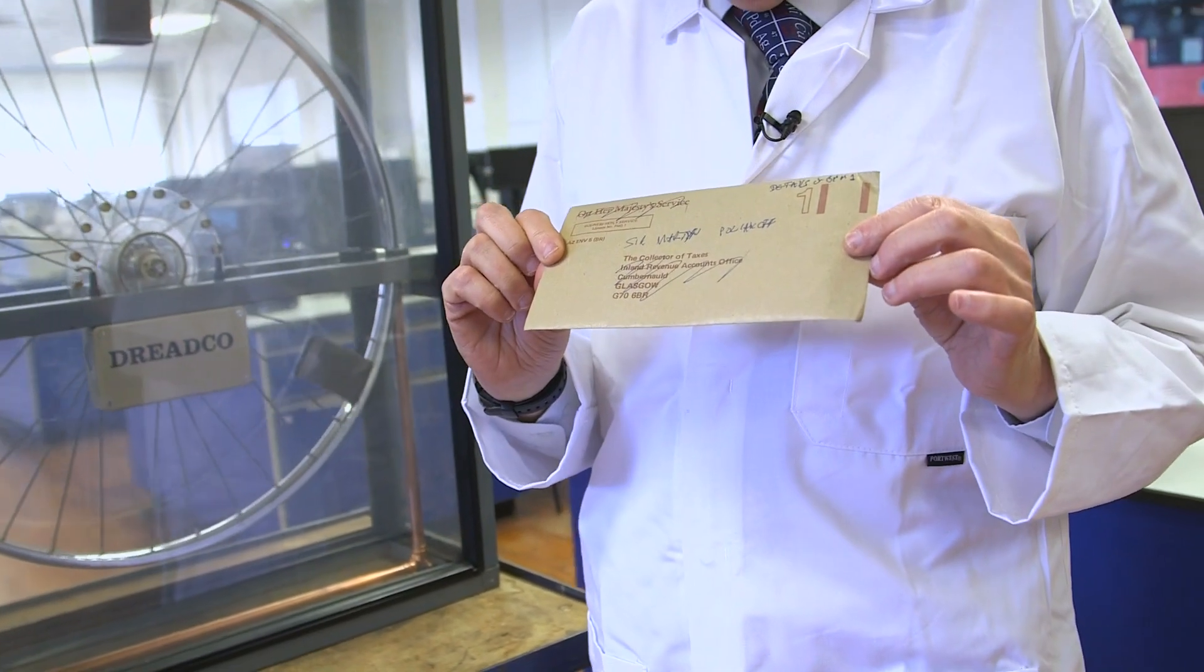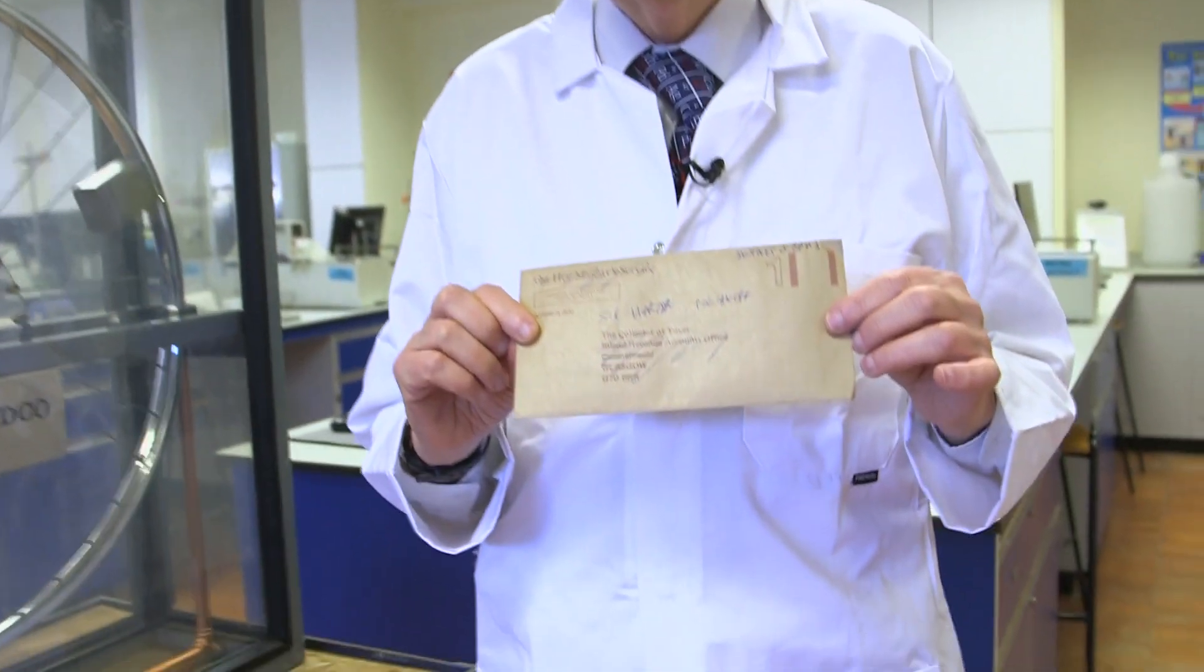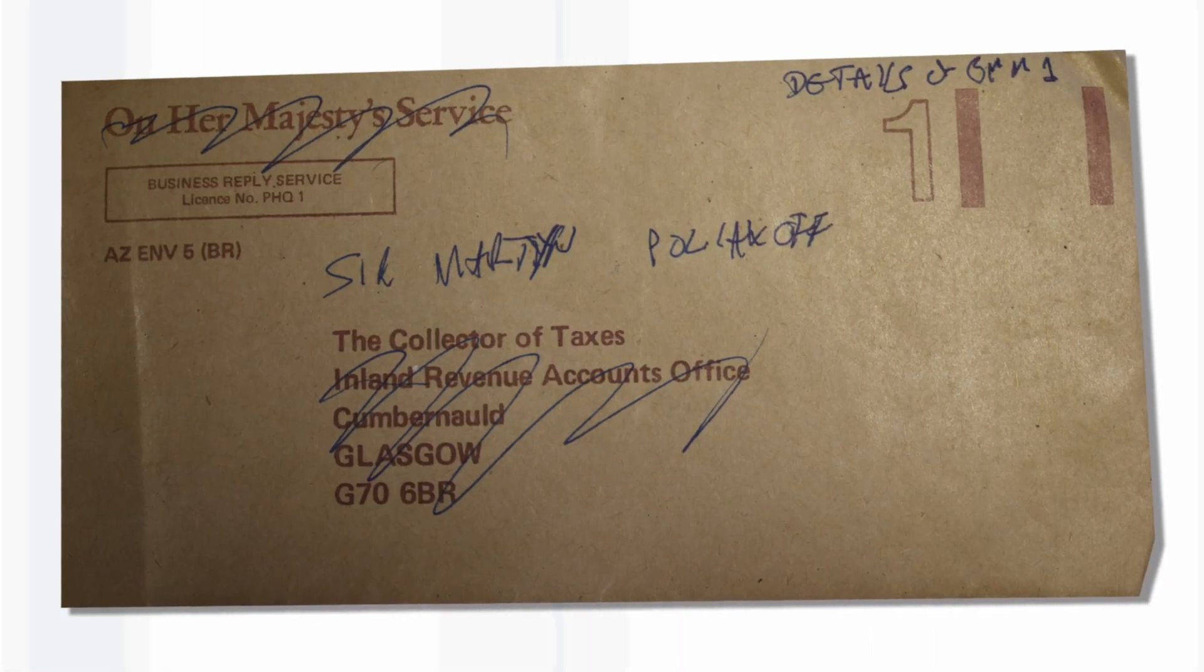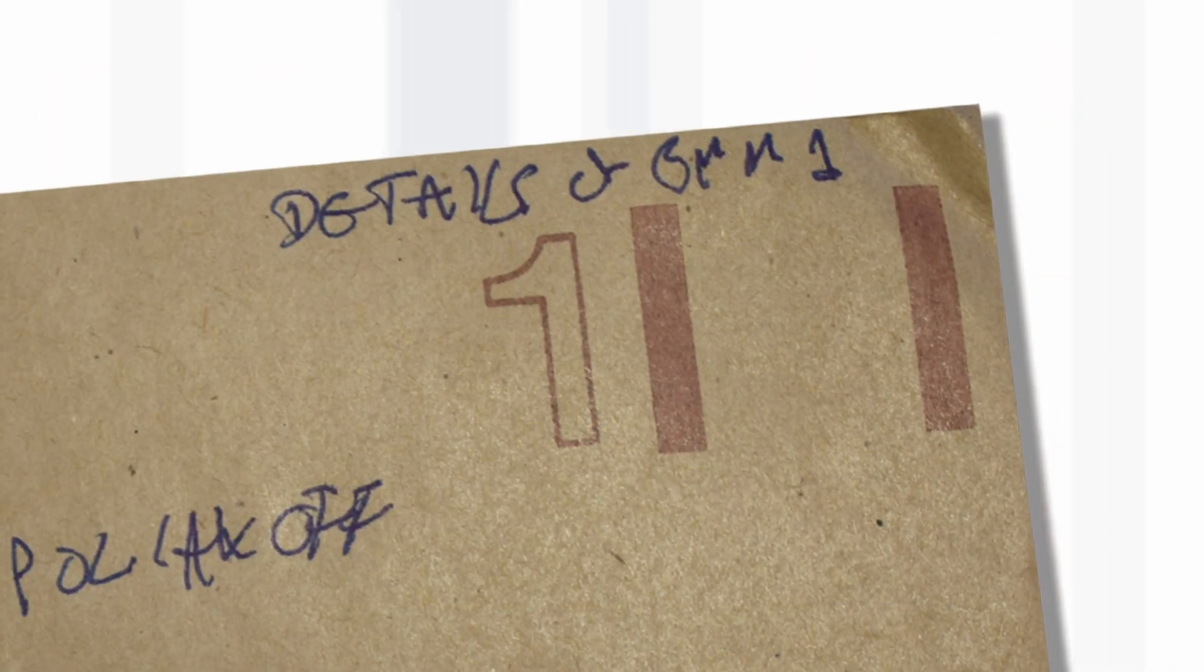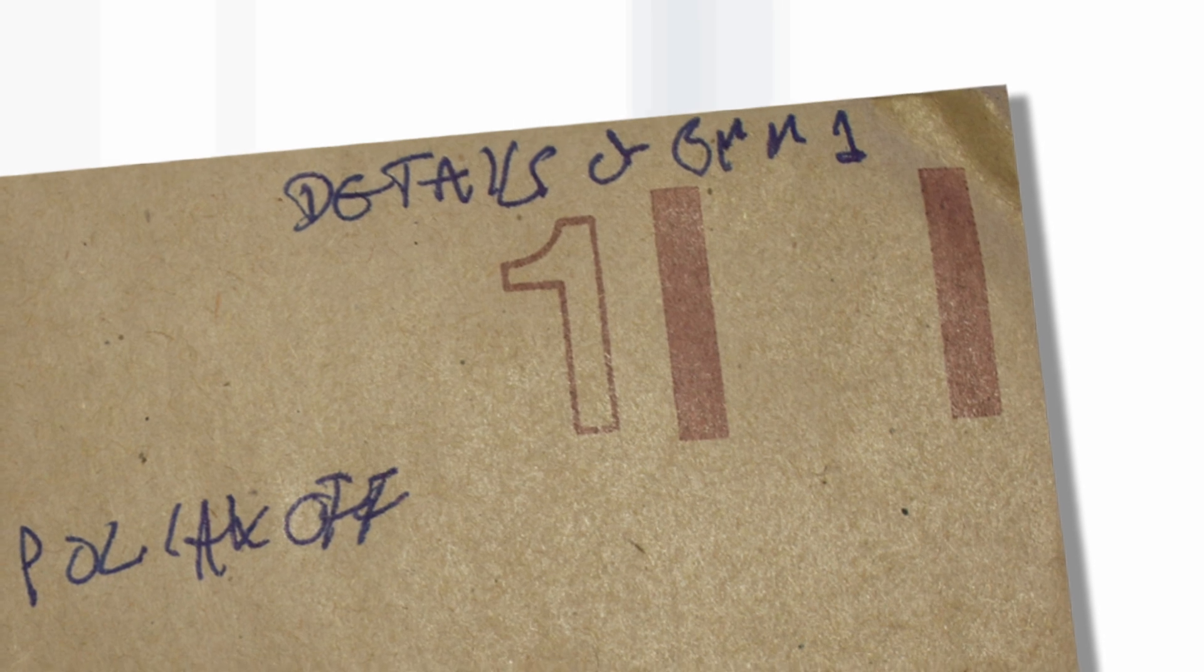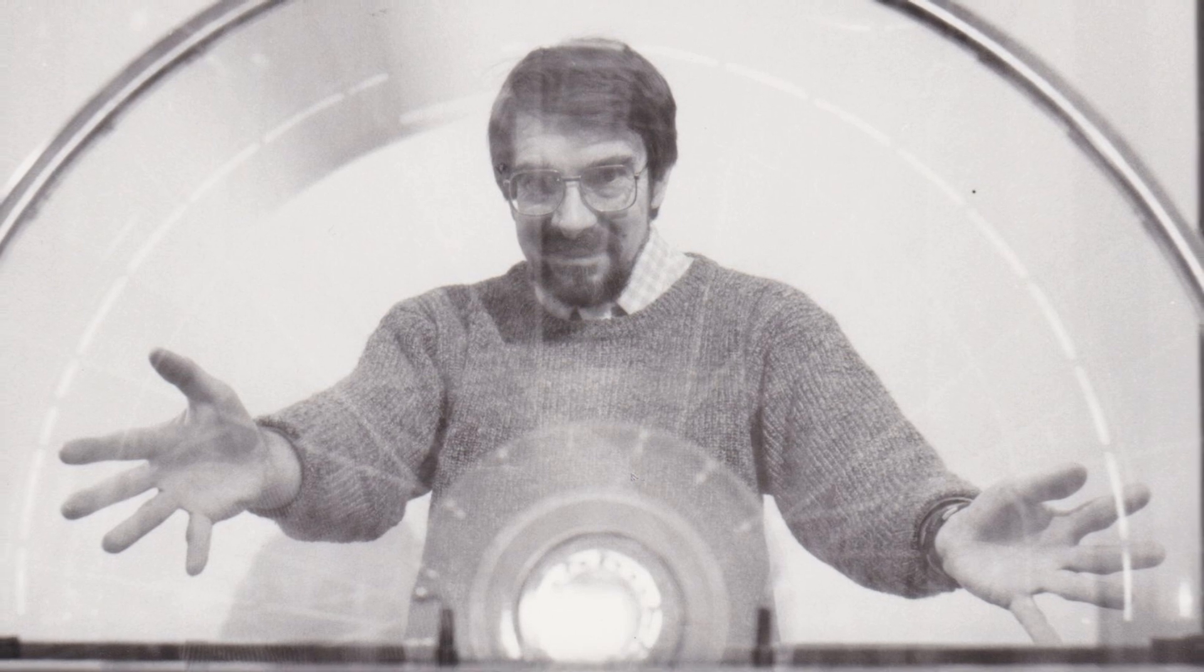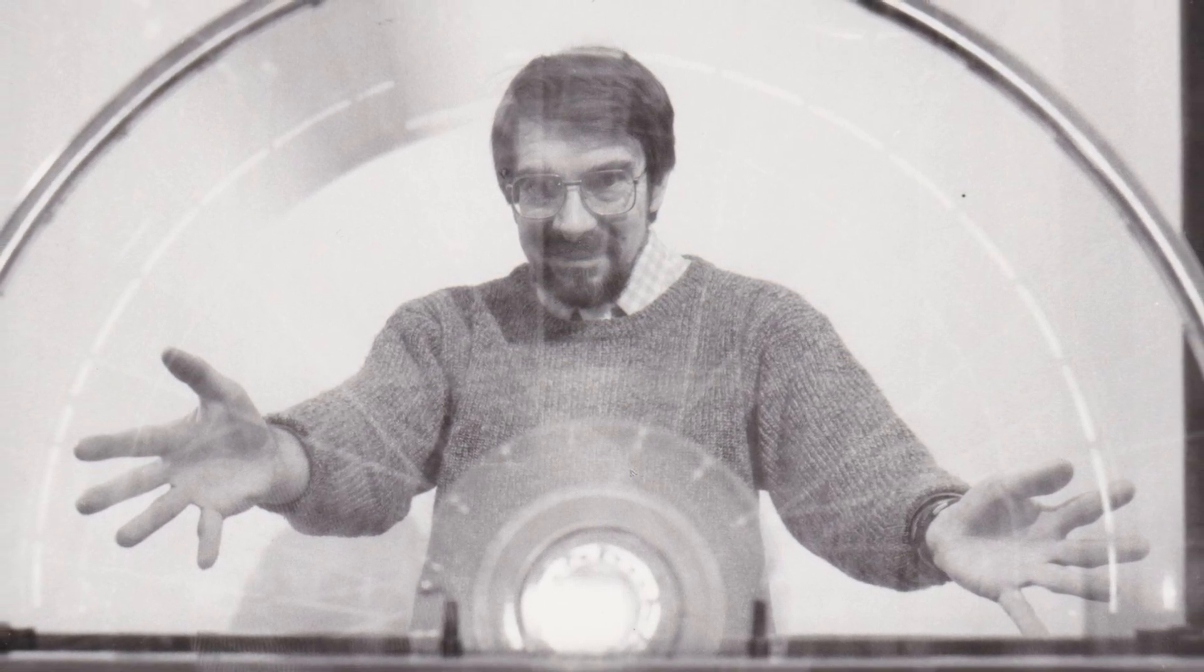Just before David died, I persuaded him to write me a letter explaining how the machine works. Here is the envelope. It's quite a funny envelope - a reused one from the UK tax authorities. You can see it says Sir Martin Polyakoff, and it says here details of PMM-1, Perpetual Motion Machine 1. He built four of them. David was the only person in the world who ever made and sold perpetual motion machines to people who knew they were fraudulent, but they still bought them because they were fun.